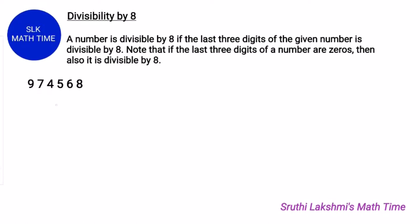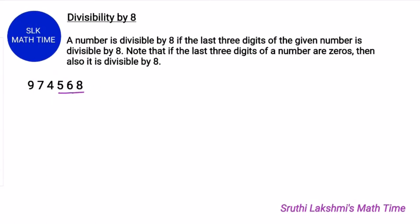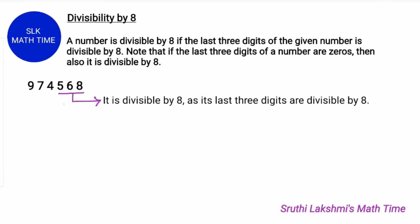Consider the number 974568. Here the last three digits are 568, and 568 is divisible by 8. So 974568 is also divisible by 8.